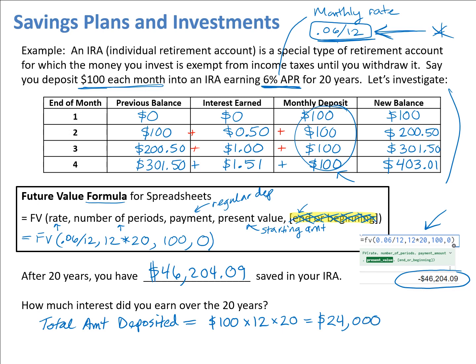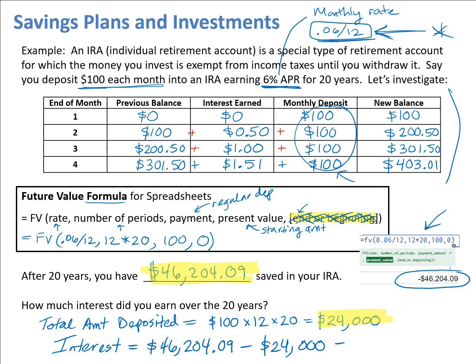Comparing what we have in the account to what we actually deposited, we can see there is a lot more money in the account. The difference between those two is how much we've earned in interest. Subtracting: $46,204.09 minus $24,000 gives us $22,204.09 earned in interest. That's quite a bit — it's almost as much as we deposited ourselves.